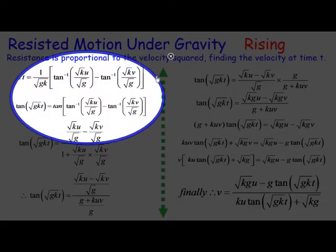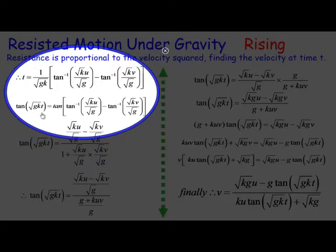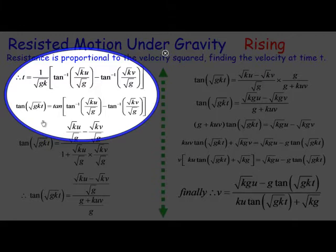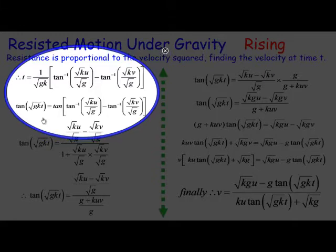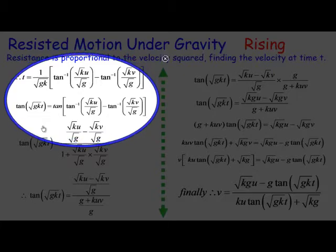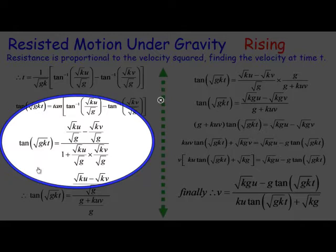Once we multiply by root gk and then take the tan of both sides, we have to use the tan expansion. Basically we end up getting the tan a minus b result, which is tan a minus tan b all over one plus tan a times tan b. That's the expansion. We then put in the values and we end up getting, after manipulation, the tan of root gk and then t, and we basically have this expression here.